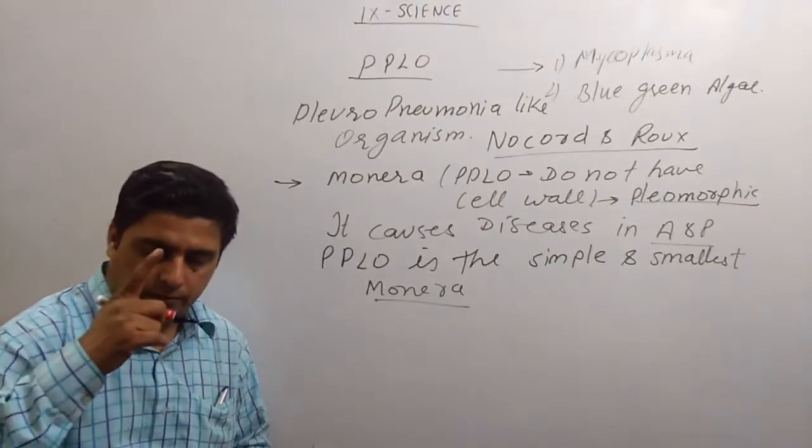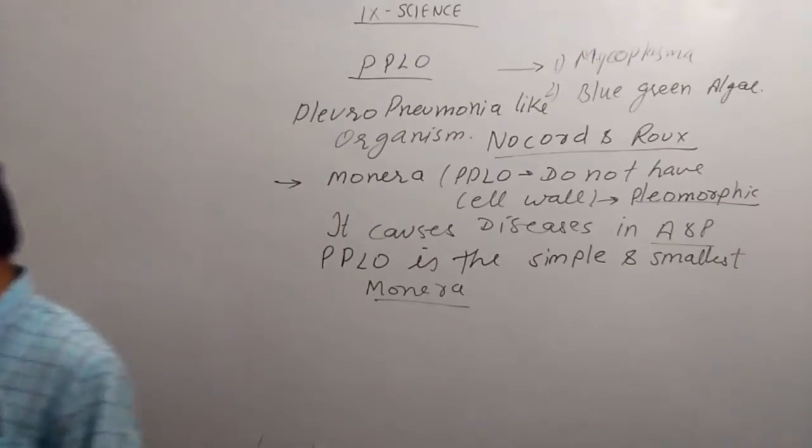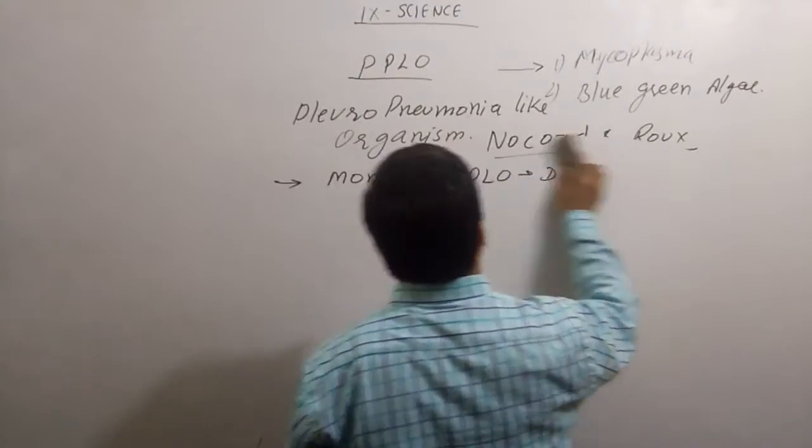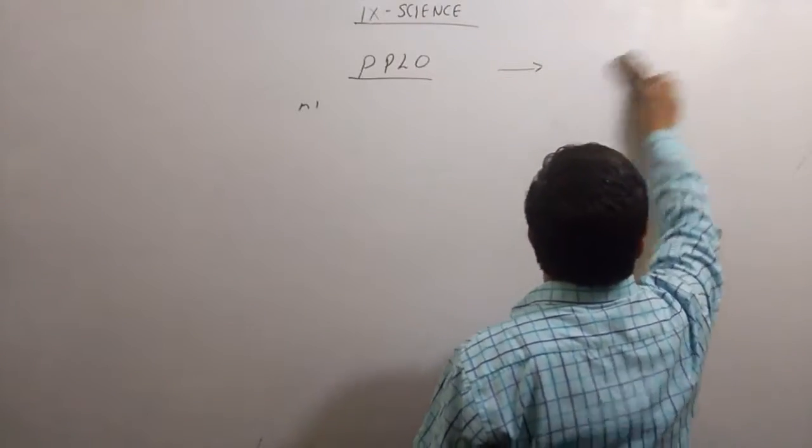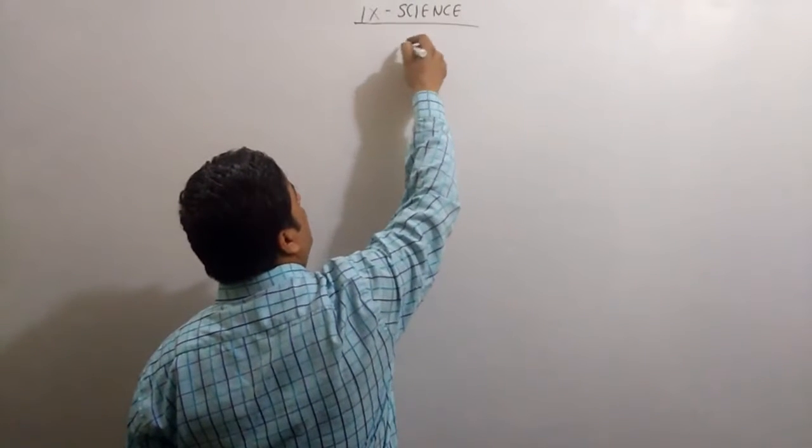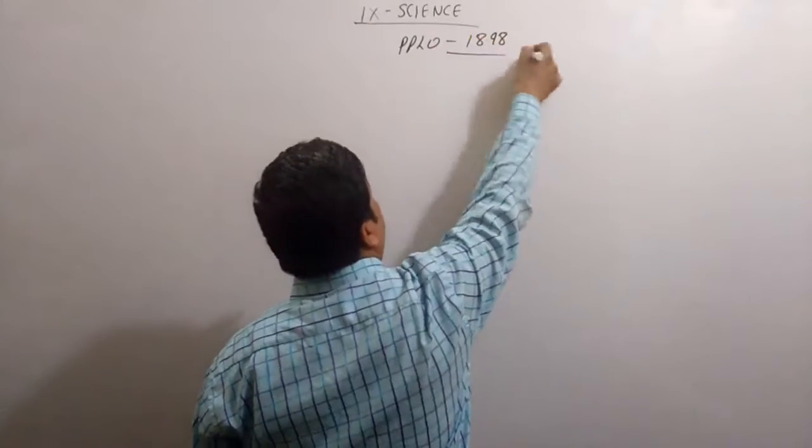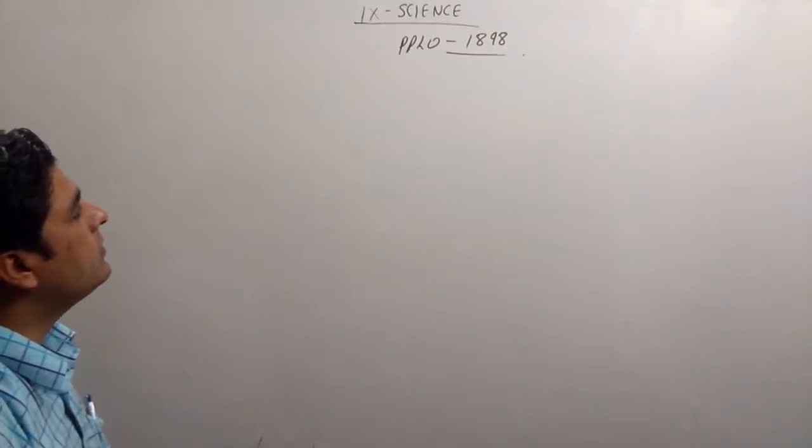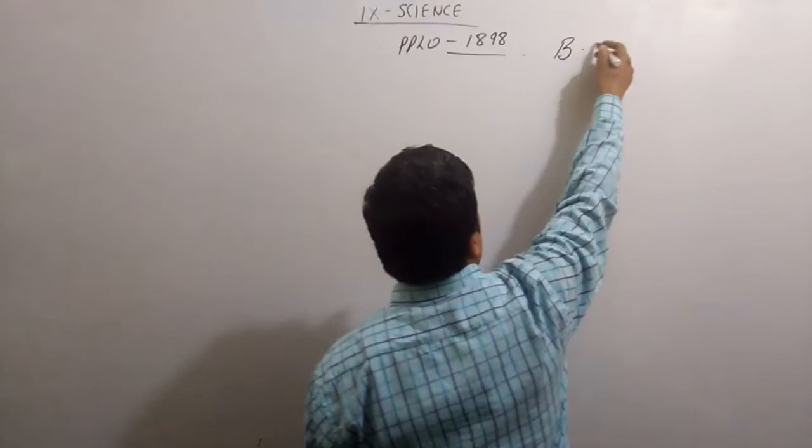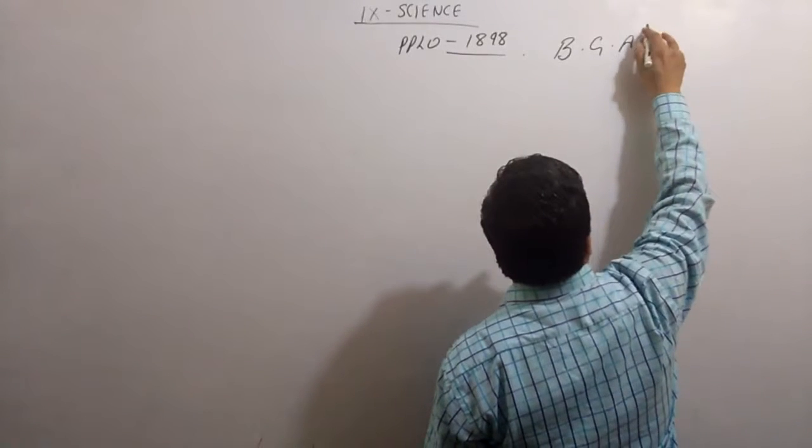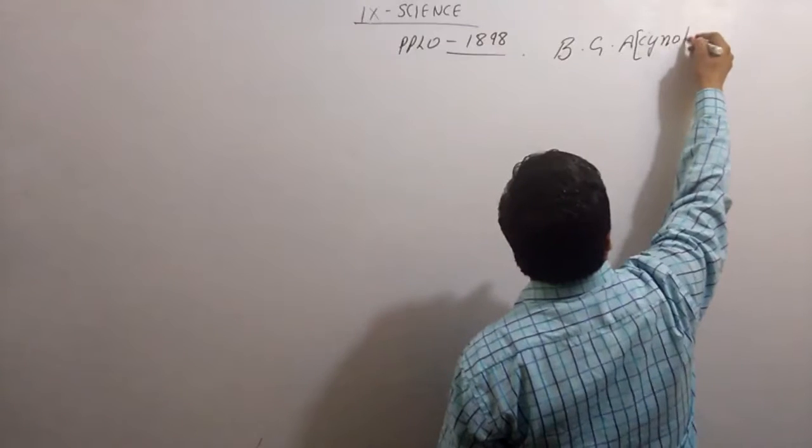Now we are moving towards blue-green algae. I have heard this PPLO was discovered in 1898. Now, come to BGA. BGA's another name is cyanobacteria.